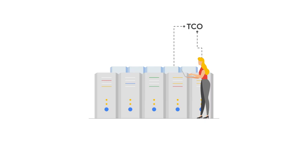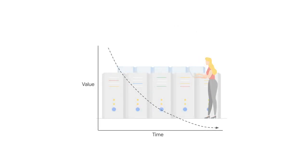Before the cloud, IT CapEx costs were often managed centrally. For accounting teams, a data center, for example, would be treated as a property or asset, with a lifespan of 3 to 10 years, and with a depreciation value for tax purposes. When organizations run their business using public cloud services, much of their capital expenditure no longer applies. Instead, there's a shift towards a pay-as-you-go, OpEx model.